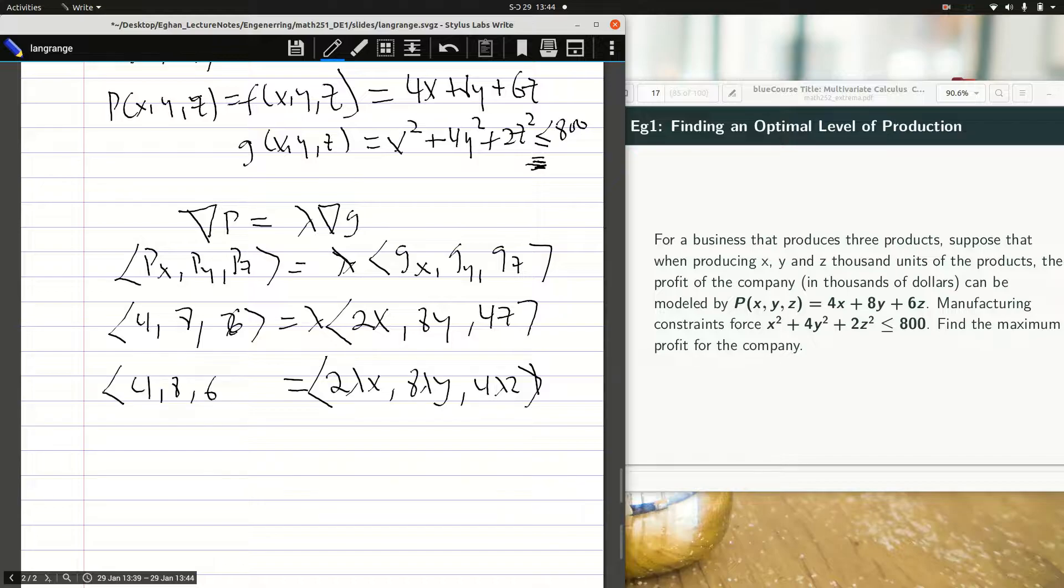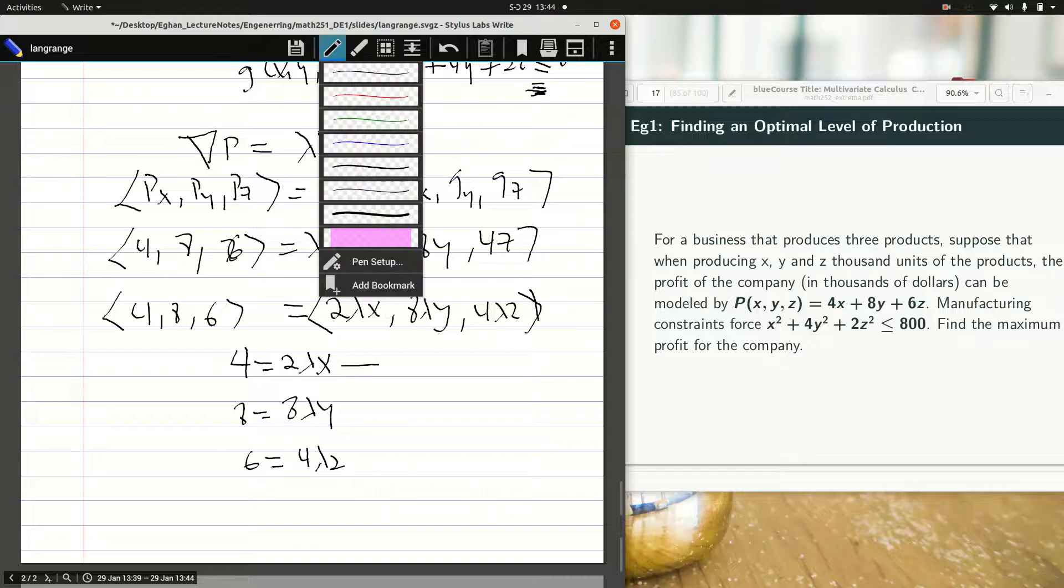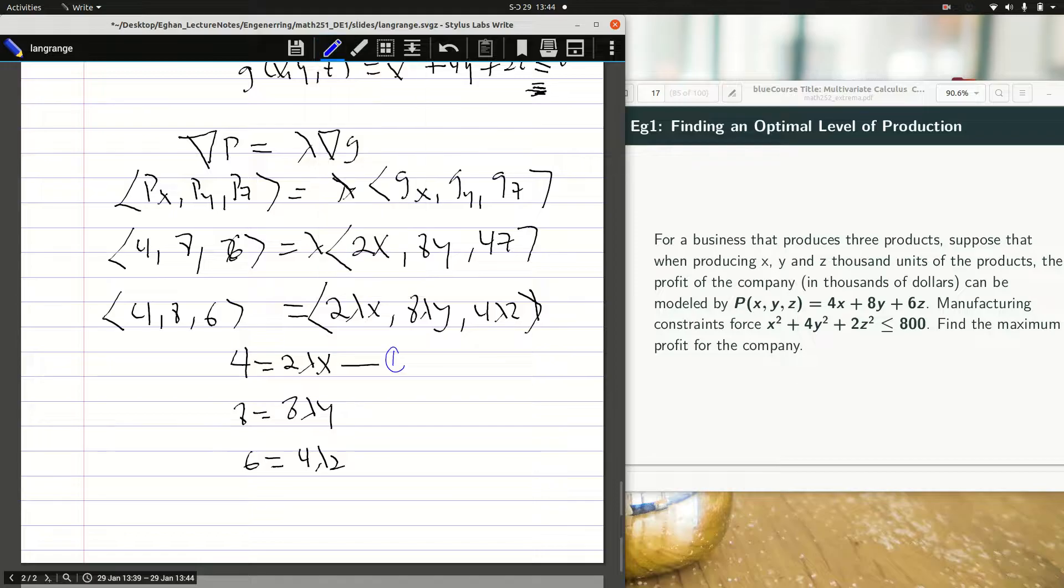Now because they are equal, it means I can equate term by term. And so 4 equals 2 lambda X as equation 1, 8 equals 8 lambda Y, and then 6 is equal to 4 lambda Z. I'll label them as equation 1, 2, and 3. From equation 1 you can see that X will be equal to 4 over 2 lambda, which is the same as 2 over lambda.